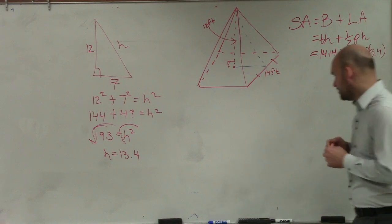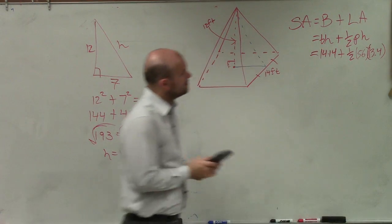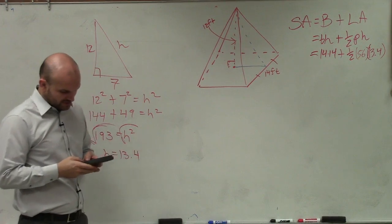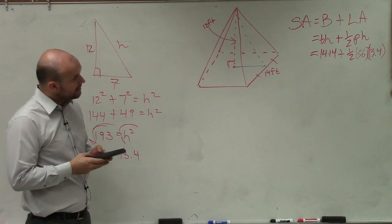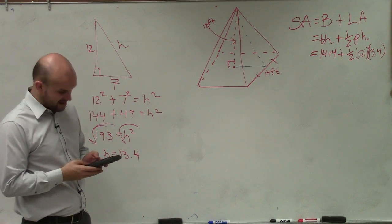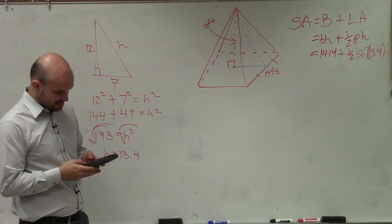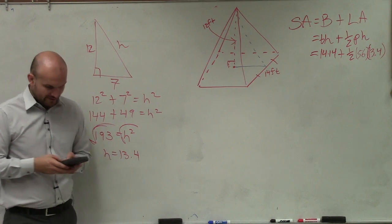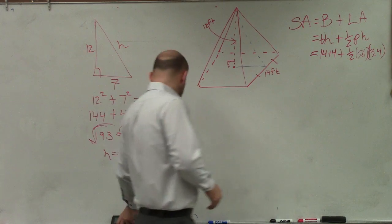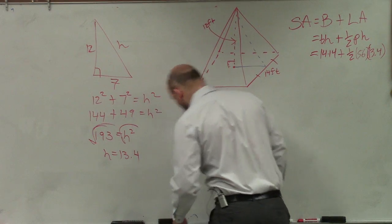So now, I plug in all that information. So I do 14 times 14, which is 196, plus 0.5, which is 1/2, times 56, times 13.4. And when I do that, I get 571.2.